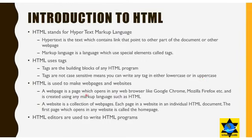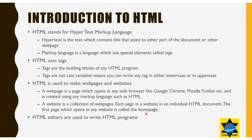HTML is used to make web pages and websites. A web page is a page which opens in any web browser like Google Chrome or Mozilla Firefox, and is created using a markup language such as HTML. A website is a collection of web pages, and each page in a website is an individual HTML document. The first page which opens in any website is called the home page.